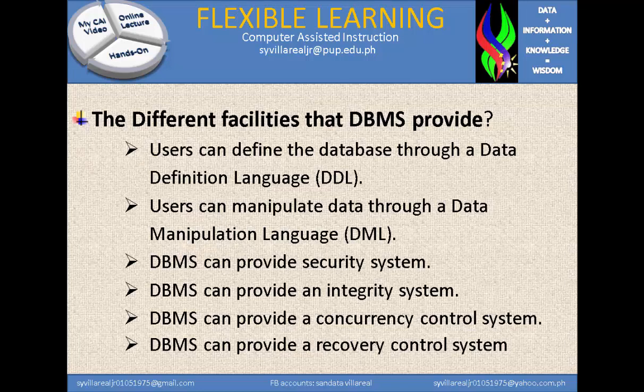Next, DBMS can provide a recovery control system. This is what we call backups. We can backup the system, the database, and the data — that is what we call the recovery control system. An example is the DPI system glitch, and after a few days they already recovered the amount necessary for individual depositors.